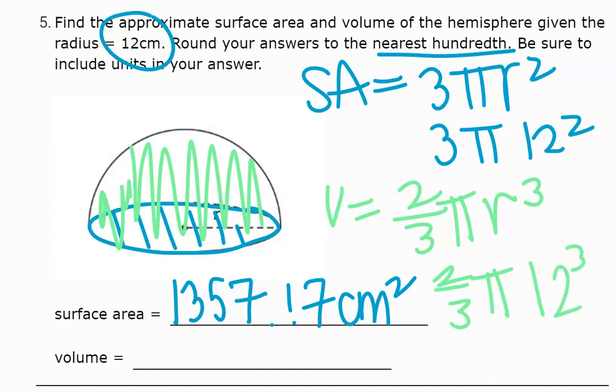So 2 divided by 3 times π times 12 to the third power is going to give me as a decimal: 3,619.114, so that's 3,619.11.